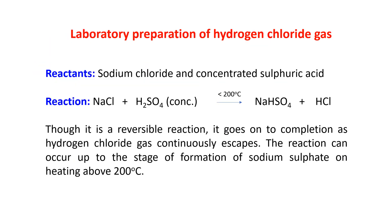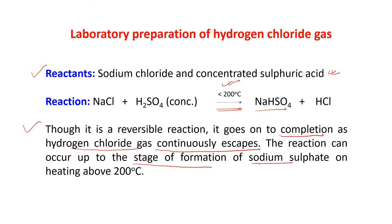Laboratory preparation of hydrogen chloride gas: the reactants are sodium chloride and concentrated sulfuric acid. The reaction is NaCl plus concentrated sulfuric acid below 200 degrees centigrade — this is very important children. Below 200 degrees centigrade it forms HCl and NaHSO4. Though it is a reversible reaction, it goes to completion because the hydrogen chloride gas continuously escapes. The reaction can proceed up to formation of sodium sulfate on heating above 200 degrees centigrade.